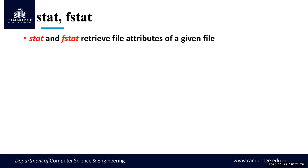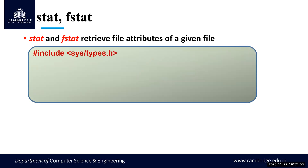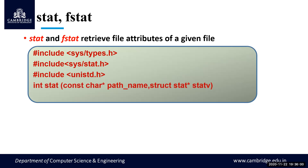Now we'll come back to the stat and fstat functions. Stat and fstat retrieve the file attributes of a given file. That's why I brushed up the concepts of Unix file attributes. These functions are available to get the file attributes of a given file. The header files needed are sys/types.h, sys/stat.h, and unistd.h. The stat structure is defined in sys/stat.h, and the enumerated data types are defined in sys/types.h.